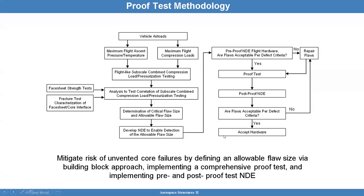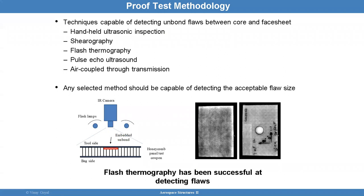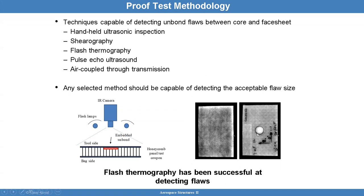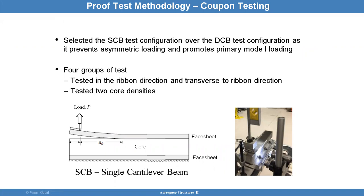This method has a lot of merit and is very powerful. Non-destructive evaluation techniques that can be used include handheld ultrasonic inspection, thermography, flash thermography, pulse echo, and air-coupled transmission. Flash thermography is particularly good — you can see it clearly showing the flaw location. Coupon testing with the single cantilever beam test allows you to extract the energy release rate as a function of load to determine fracture toughness, which can later be used for failure prediction.